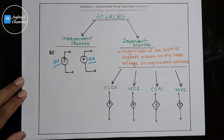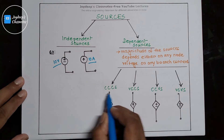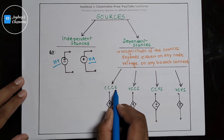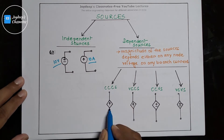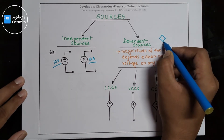A dependent source means the magnitude of those sources depends on either a node voltage or any branch current. This dependent source can be classified into four parts. The first is CCCS — that means current controlled current source. Dependent sources are denoted by a diamond shape.